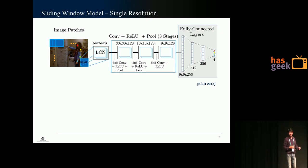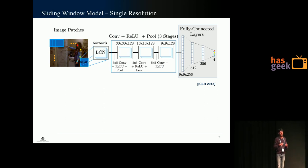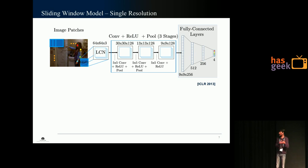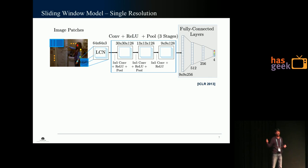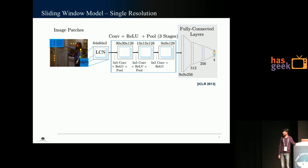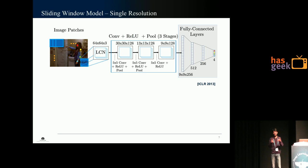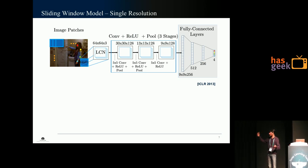At test time, we run this detector in a sliding window fashion over the entire image. At each position of the patch, we run the detector and get four confidence values corresponding to the probability of each joint being present. When we slide this detector throughout the image, we end up with four response images.